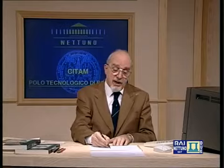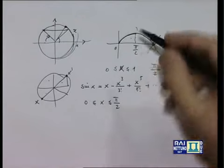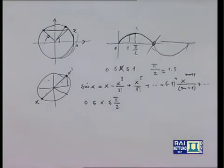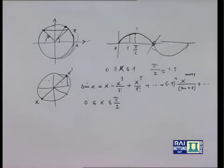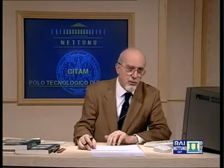π/2 è circa 1.5, quindi l'intervallo [0, π/2] supera [0,1]. Per migliorare la situazione, è utile riportare il calcolo a un intervallo contenuto in [0,1]. Questo si può fare facilmente.